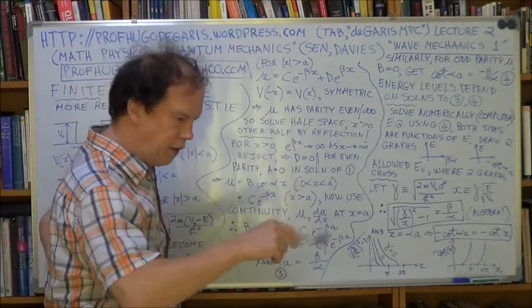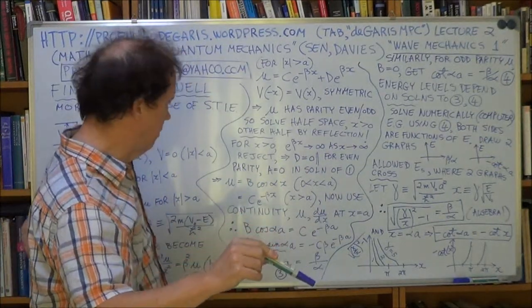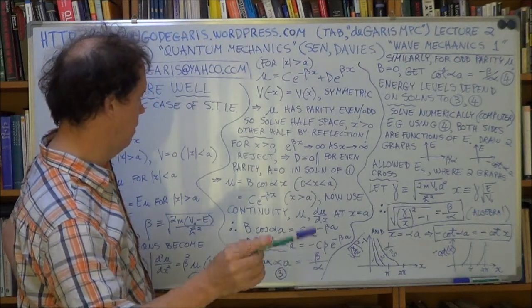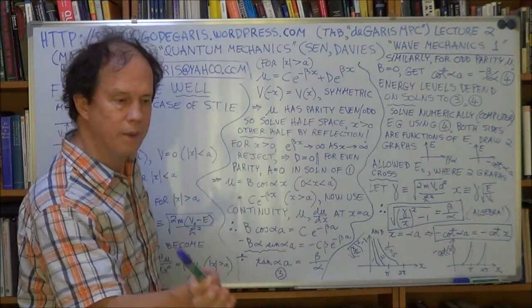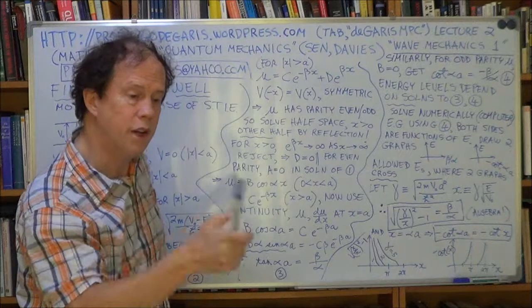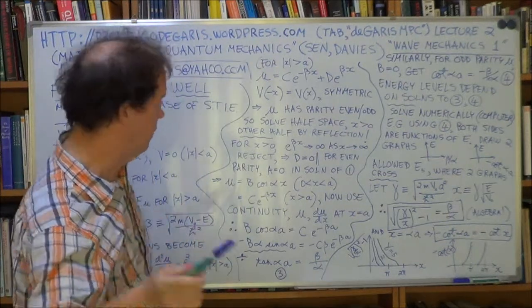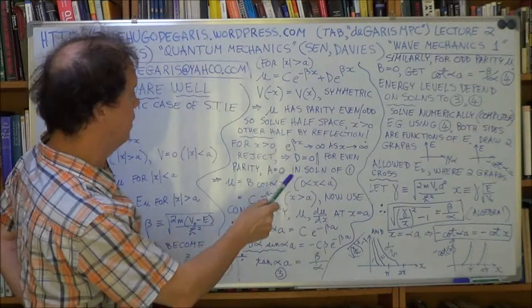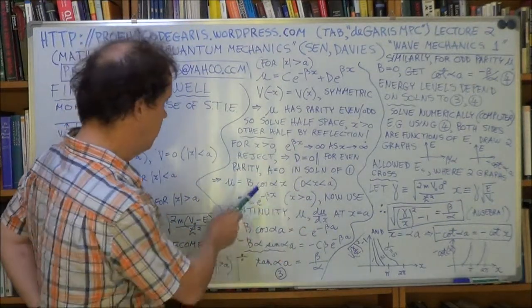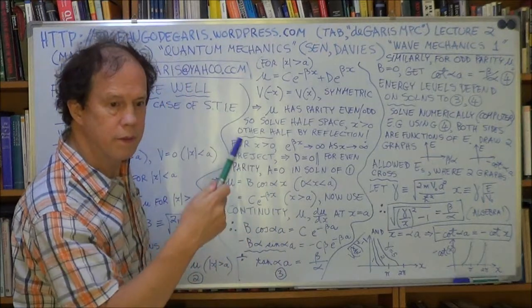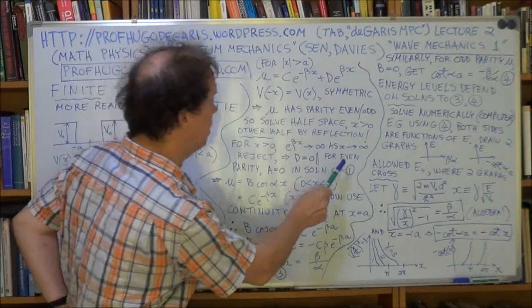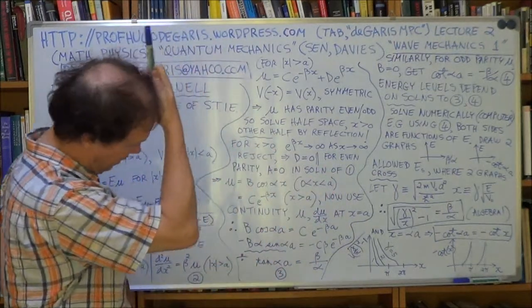Now, for even parity, you had a sine plus b cos. So you want the sine part to disappear because sine is an odd function. Sine of minus x is minus sine of x. So we're talking even parity. So let's get rid of the sine. So you've got a sine plus b cos. So let's make a zero. So that leaves you with b cos. That's an even function. That's what you want because we're now dealing with even solutions to u.